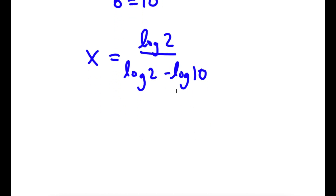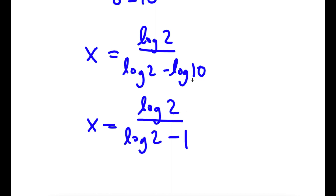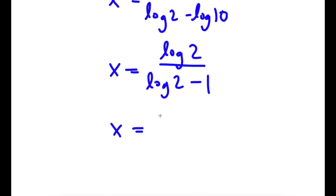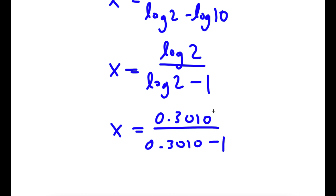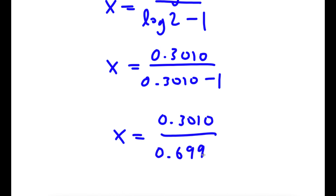Now, log 10 is simply 1. So I have x is equal to log 2 over log 2 minus 1. Log 2 is equal to 0.3010, so I have 0.3010 over 0.3010 minus 1, and this is equal to 0.3010 over negative 0.6990.